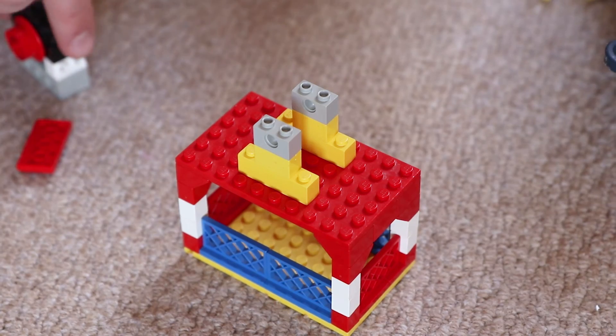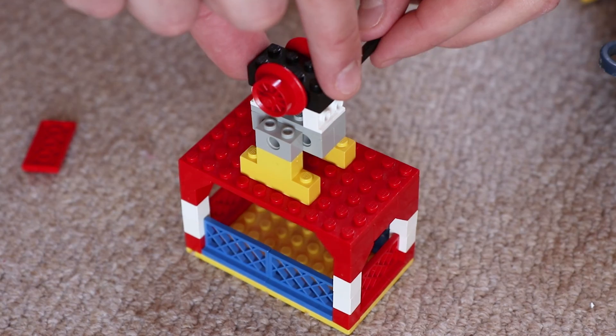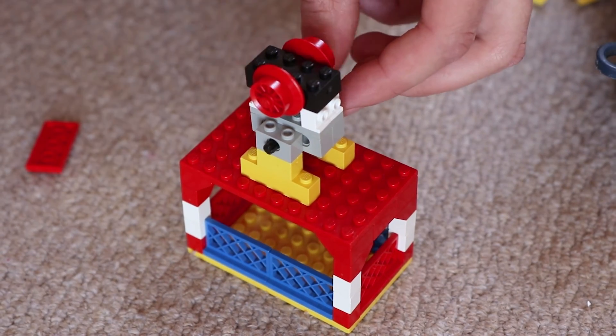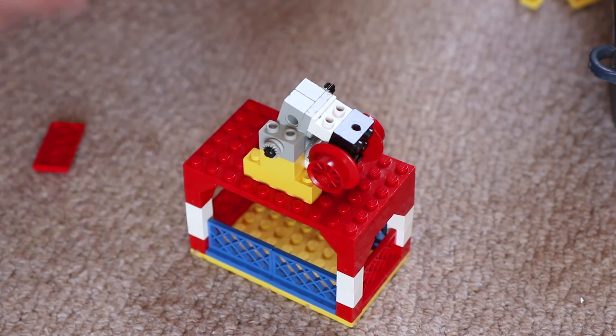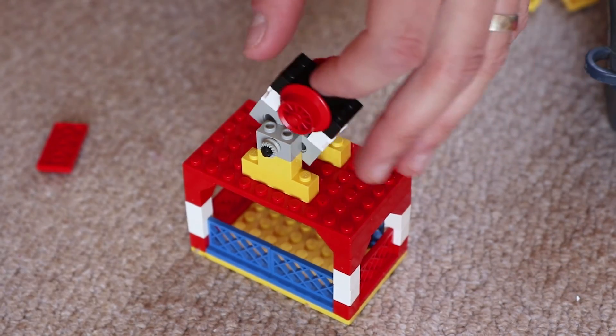Now slot this part into the construction you made on top of the cable car and fix into place with a cross axle and secure. This is what's going to connect your cable car to the cables whilst keeping it level all the way up.